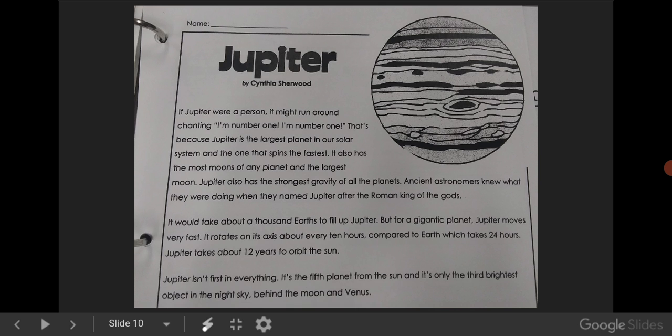Jupiter. If Jupiter were a person, it might run around chanting, I'm number one! That's because Jupiter is the largest planet in our solar system and the one that spins the fastest. It also has the most moons of any planet and the largest moon. Jupiter also has the strongest gravity of all the planets. Ancient astronomers knew what they were doing when they named Jupiter after the Roman king of the gods.